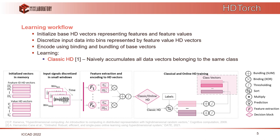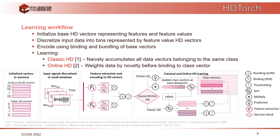Learning in the simplest way is done by naively accumulating all data windows or vectors belonging to the same class. In a more sophisticated way, before adding a sample to the class model vector, we weight each sample by a weight that defines the novelty of that data sample. This can prevent overfitting with more common class patterns, for example in the case of a very unbalanced dataset.